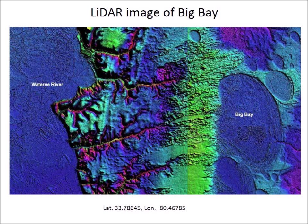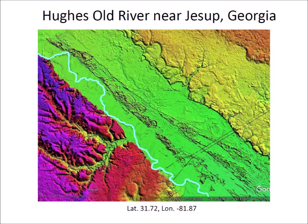This is a LiDAR image of the Hughes Old River, 14 kilometers north of Jessup, Georgia. The Hughes Old River is a minor tributary of the Altamaha River, but sometime in the past it was about 10 kilometers wide. The islands in the center of the river's flood plain show splash chevrons. How can such a small stream have such a wide riverbed? One possibility is that a large volume of water was released from the melting of the glacier ice boulders that formed the Carolina Bays.